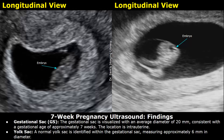These are the findings. Gestational sac: the gestational sac is visualized with an average diameter of 20 mm, consistent with a gestational age of approximately 7 weeks. The location is intrauterine.